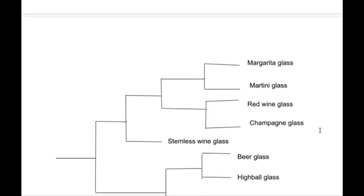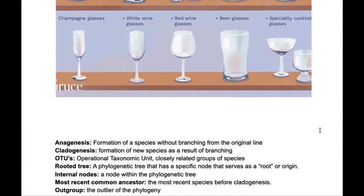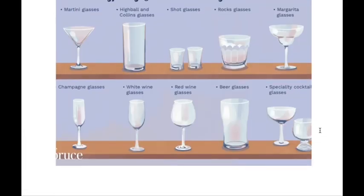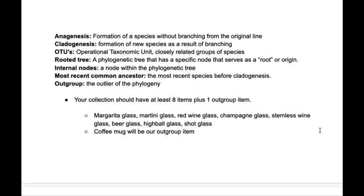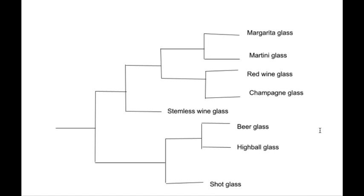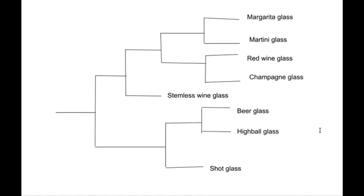In our phylogenetic tree, we can see cladogenesis, which is the formation of a new species as a result of branching. We also see operational taxonomic units, like the martini and margarita glasses. We also see internal nodes where each of these separate, and the most recent common ancestors from those nodes.